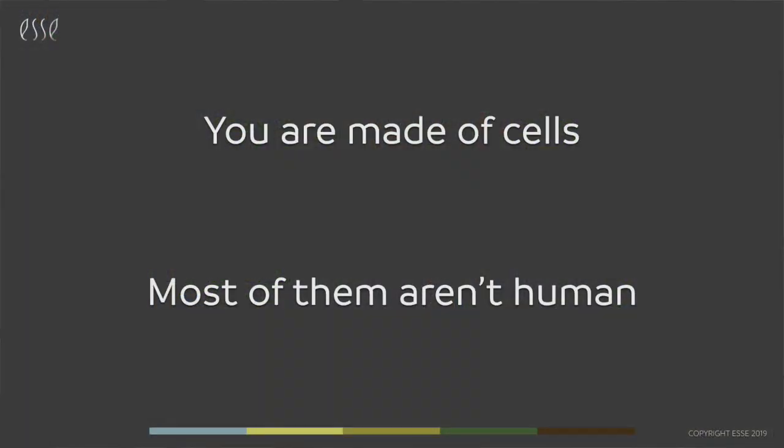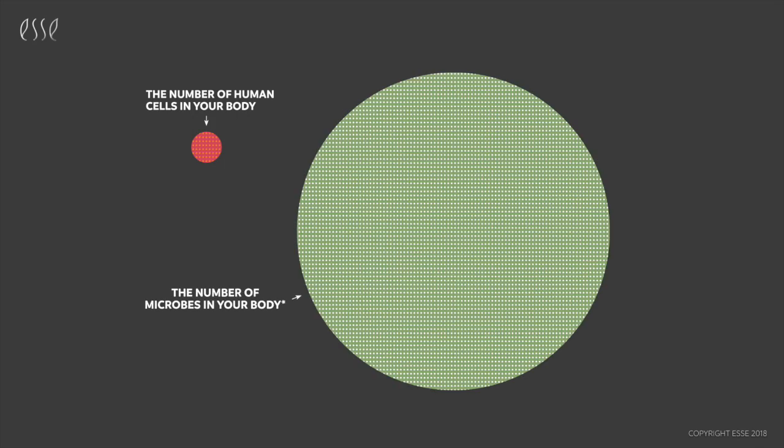So you're made of cells and most of those cells aren't human. For every human cell in your body there are at least 10 microbes.